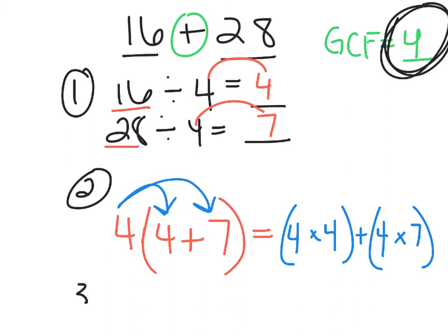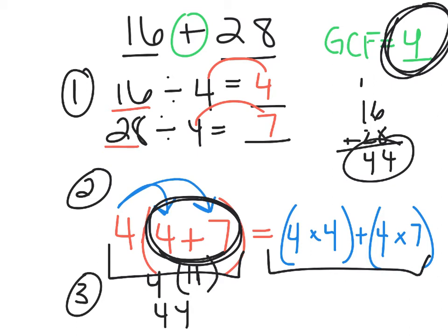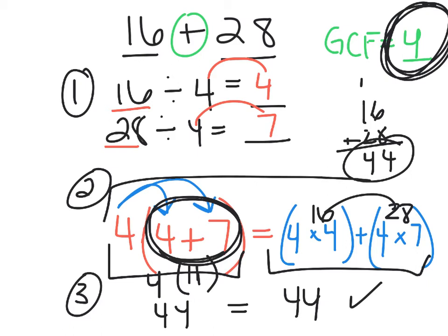The final step is to check your answer. If we add 16 plus 28 we get 44, so both factored form and expanded form should equal 44. Following order of operations on the factored side: 7 plus 4 is 11, and 4 times 11 is 44. On the expanded side: 4 times 4 is 16, and 4 times 7 is 28; adding those gives 44. Our GCF is correct, and we rewrote the distributive property and the sum of the two numbers correctly.